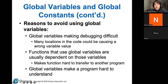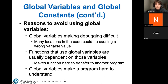A couple of reasons why you shouldn't use global variables: first of all, they make your debugging difficult because a lot of your other functions can be using the wrong value. A lot of your functions can throw an error at you and you might think your whole code is wrong, something is wrong with every single one of your functions — and you might not know that it's just one global variable that's causing all of those problems.